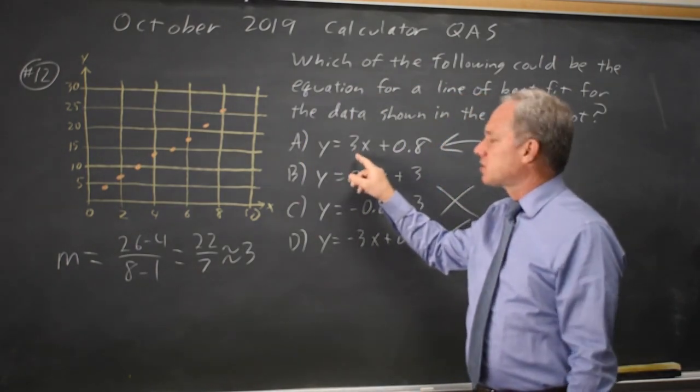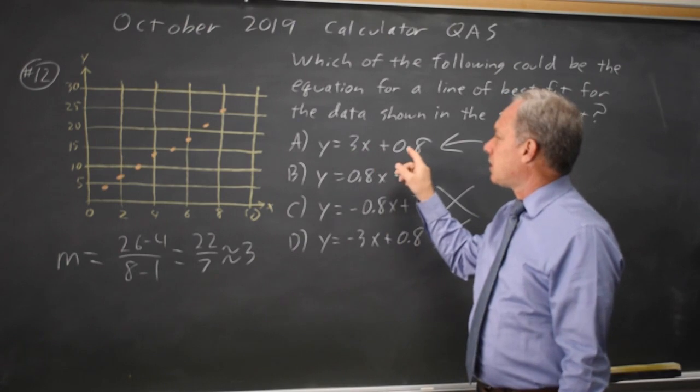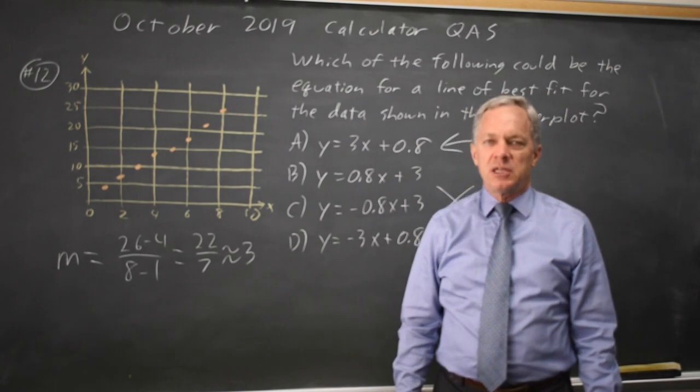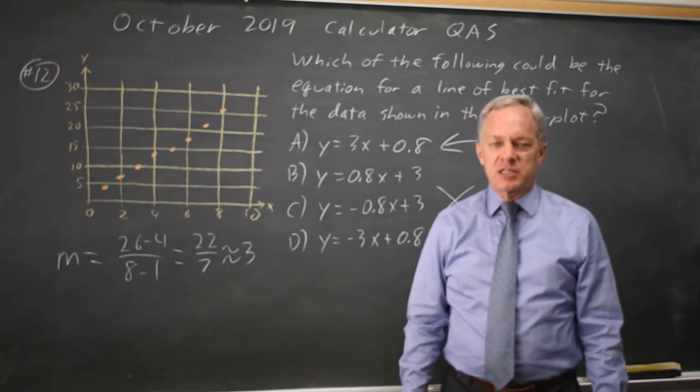And they're asking whether the slope goes with x and the intercept is a constant or the reverse. And we should know y equals mx plus b. M is the slope and it's the x coefficient.